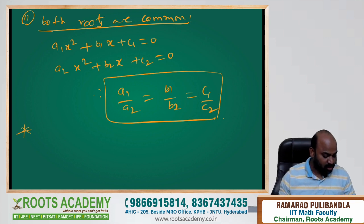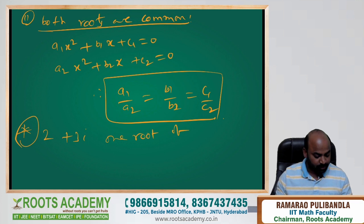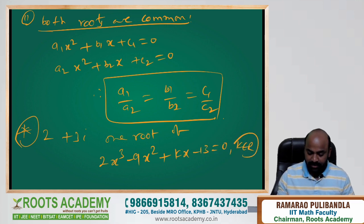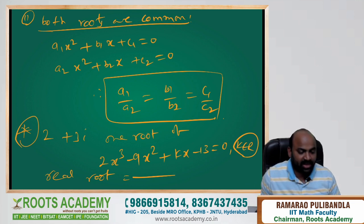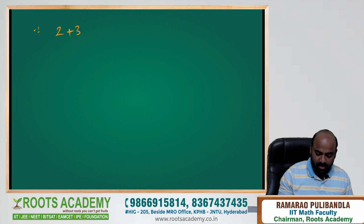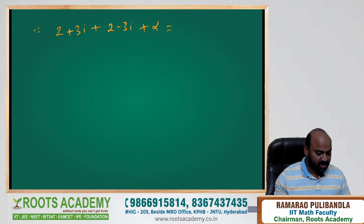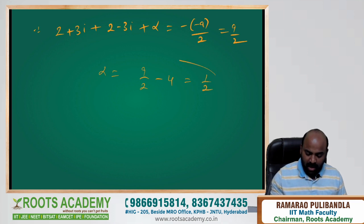Model 1 (previous JEE question): If 2 + 3i is one root of 2x³ − 9x² + kx − 13 = 0, where k is real, find the real root. Since 2 + 3i is a root, 2 − 3i is also a root. Let the roots be (2+3i), (2−3i), and α. Sum of roots = 9/2. Simplifying: α = 9/2 − 4 = 1/2. So the real root is 1/2. This was asked in JEE Mains 2015.